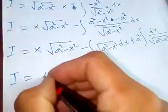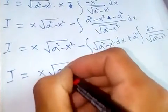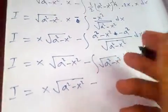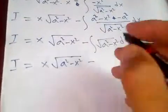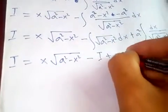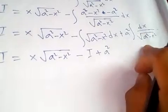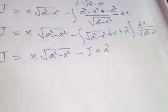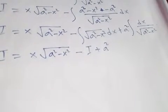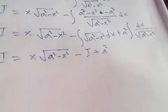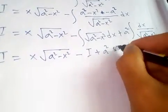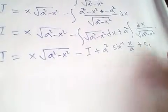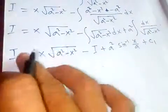We recognize that the integral of √(a² - x²) dx is our original integral I. So we have I = x√(a² - x²) - I + a² times the integral of dx/√(a² - x²). And the integral of dx/√(a² - x²) is sin⁻¹(x/a) + C₁.